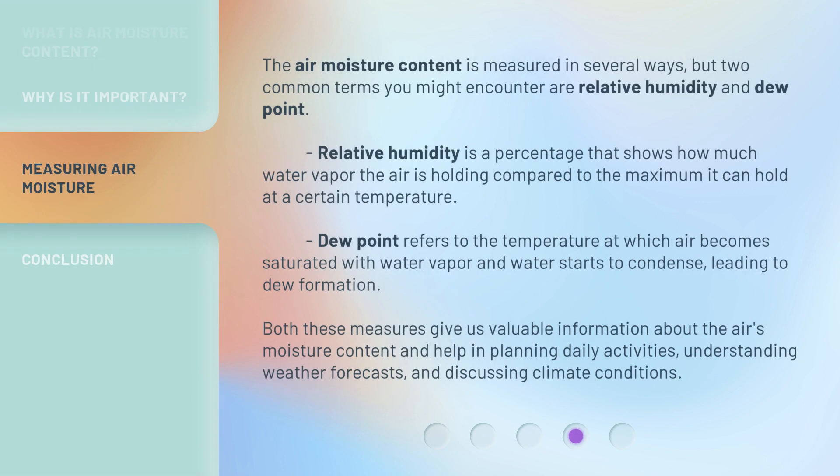The air moisture content is measured in several ways, but two common terms you might encounter are relative humidity and dew point. Relative humidity is a percentage that shows how much water vapor the air is holding compared to the maximum it can hold at a certain temperature. Dew point refers to the temperature at which air becomes saturated with water vapor and water starts to condense, leading to dew formation. Both these measures give us valuable information about the air's moisture content and help in planning daily activities, understanding weather forecasts, and discussing climate conditions.